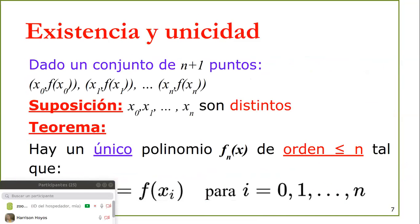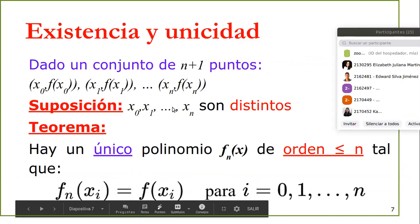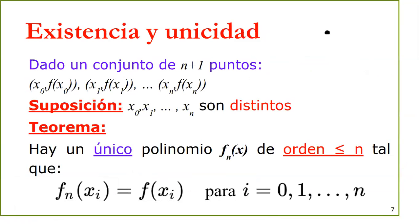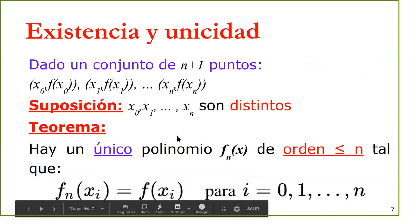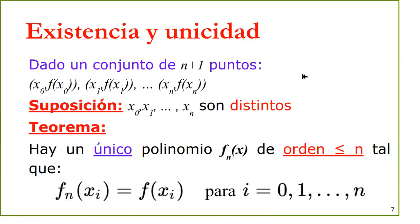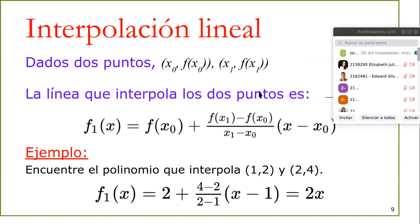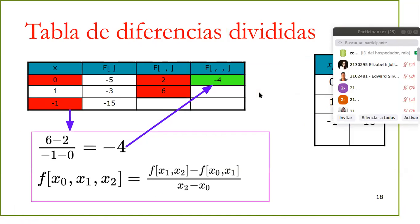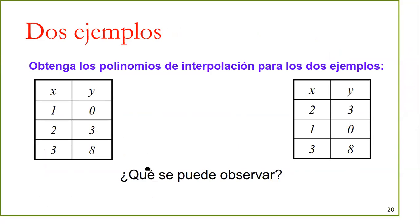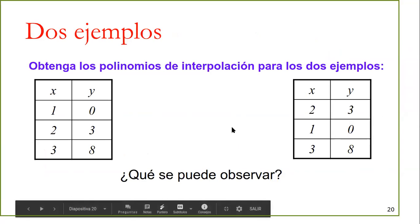Si recordamos, el teorema de existencia y unicidad nos dice que para este conjunto de n+1 puntos, considerando que sean distintos, solo existe un único polinomio que garantiza esa interpolación. Aquí no nos habla del orden, solamente nos habla de estos n+1 puntos. Los dos ejemplos corresponden a esos mismos tres puntos, solamente que están en diferente orden.